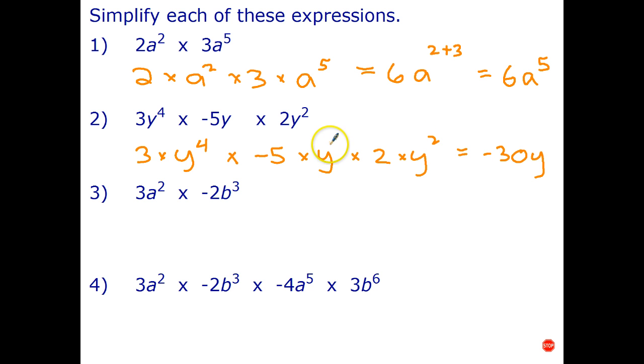To multiply powers with the same base add indices. Well this doesn't have a power on it. Well it does have a power, we just didn't write it. And that power is one. So anytime I see a variable by itself the index is one. So let's add the indices: four plus one is five plus two is seven. Okay, you go ahead please, stop the video. Simplify each of the remaining two expressions and then start the video to check your answer.